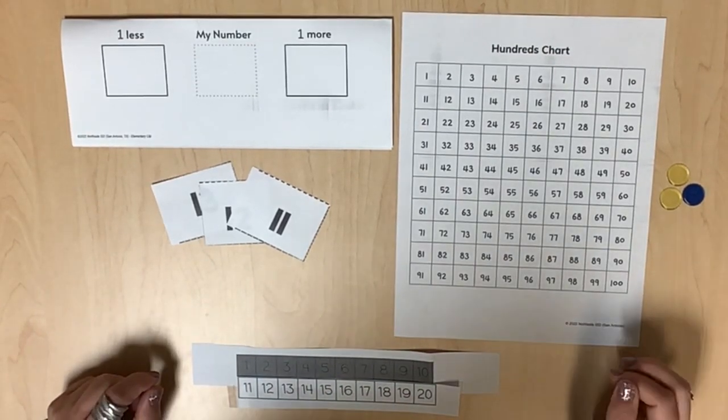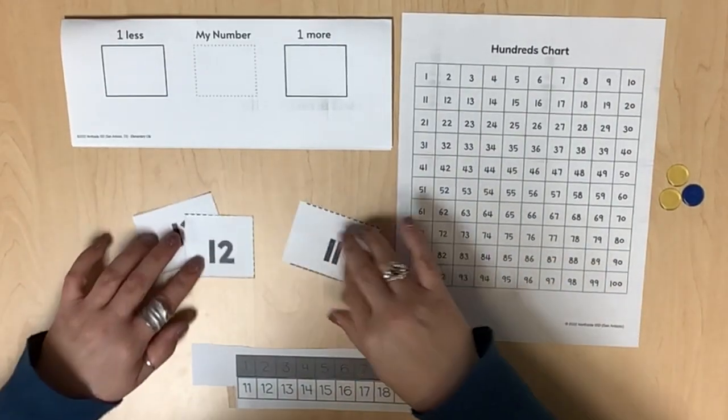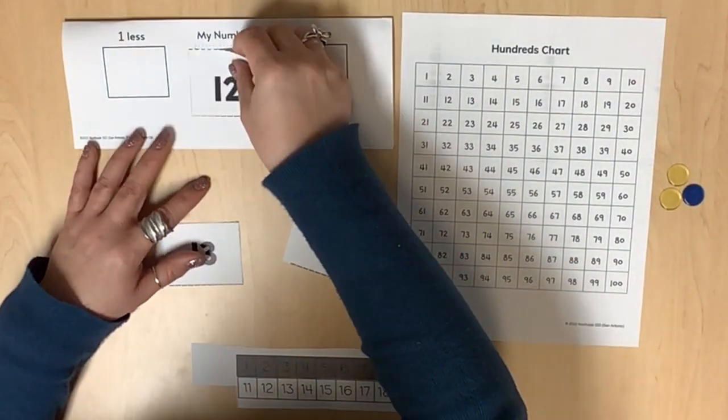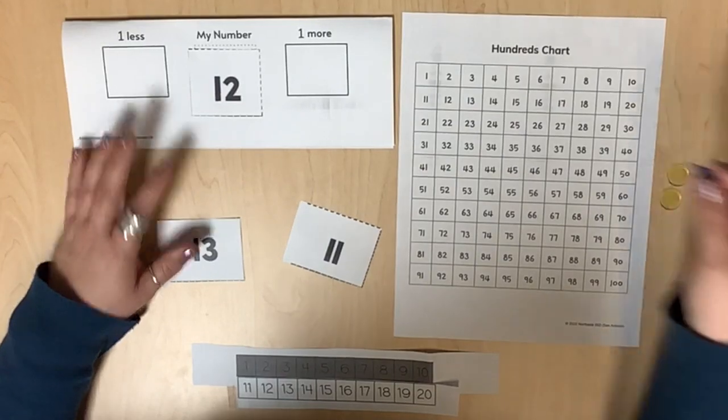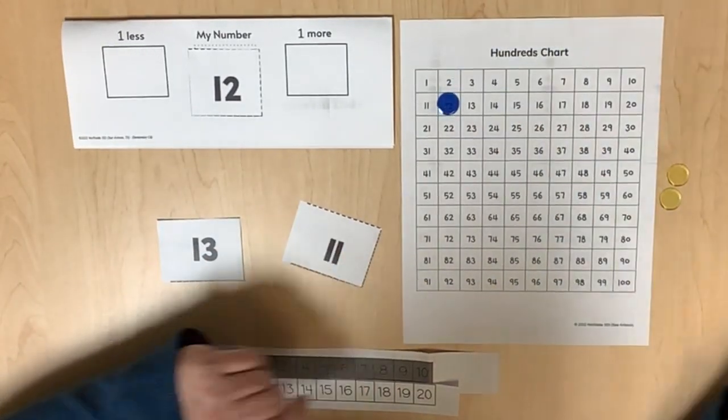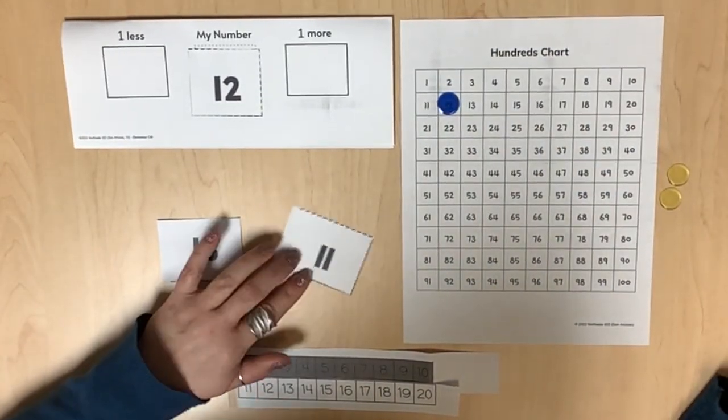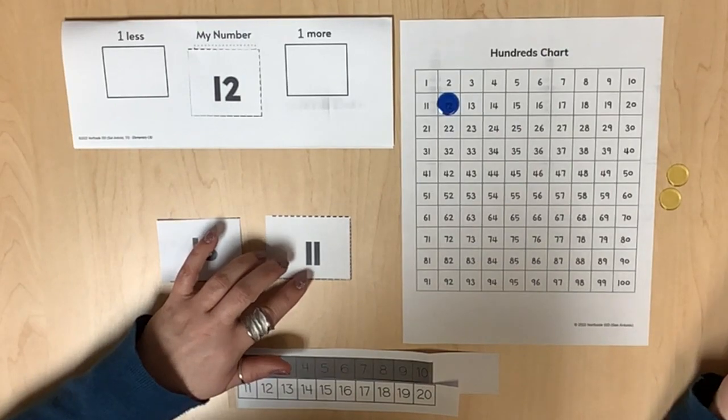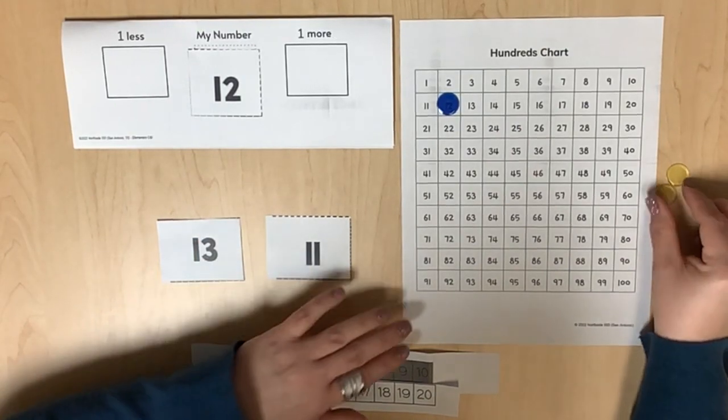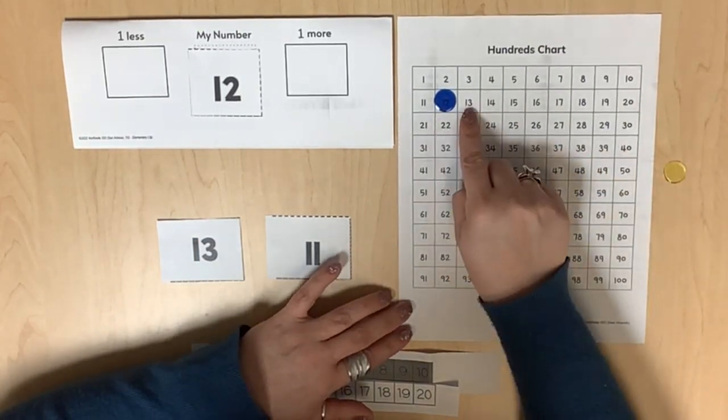Using number cards again, model a given number such as 12 by placing a transparent counter on the hundreds chart. As students identify a number that is one less or one more, encourage counting on from 12 (12, 13).